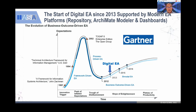What happened at the time is that the modern EA platform came up. The ArchiMate notation was introduced back in 2010, and by 2013 they had ArchiMate version 1.1. So people got a new view, and the EA could create or give feedback much more informative than just doing a drawing, documentation, or governance. Now we have a full dashboard. That's a quick history of how the digital EA concept was born — about seven or eight years ago.